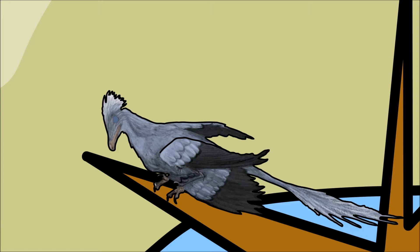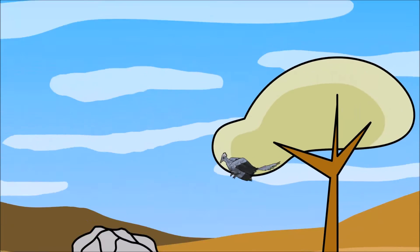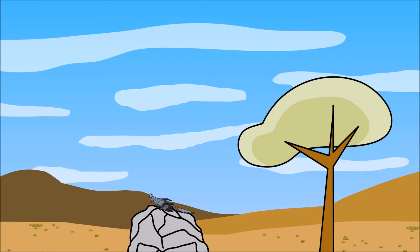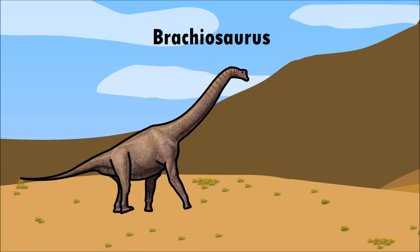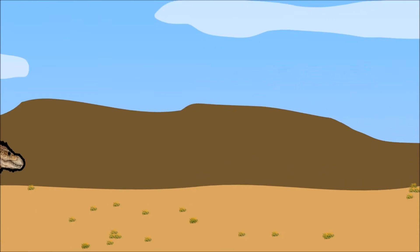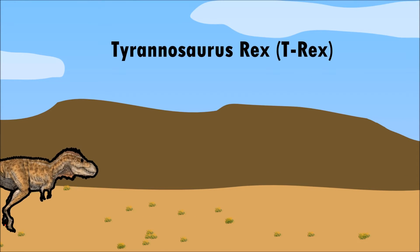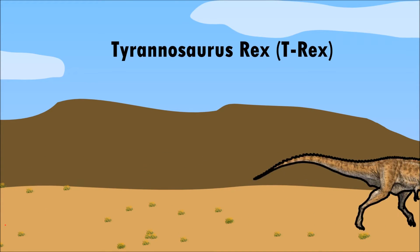One of the smallest dinosaurs was the Microraptor. This tiny dinosaur had feathers and was able to glide. Dinosaurs like the Brachiosaurus walked on four legs, and some dinosaurs, like the Tyrannosaurus rex, walked on two legs.